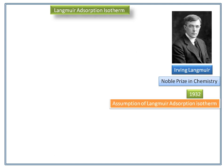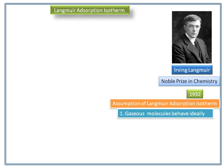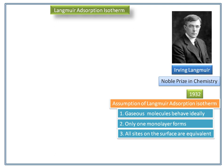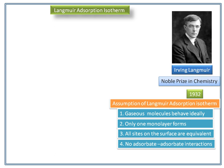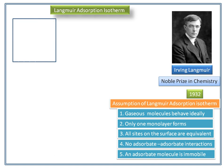Now we see the assumptions of the Langmuir adsorption isotherm. Gaseous molecules behave ideally. Only one monolayer forms. All sites on the surface are equivalent. There are no adsorbate-adsorbate interactions. An adsorbed molecule is immobile. Langmuir considered the surface of the solid to be made up of elementary sites, each of which could adsorb one gas molecule.